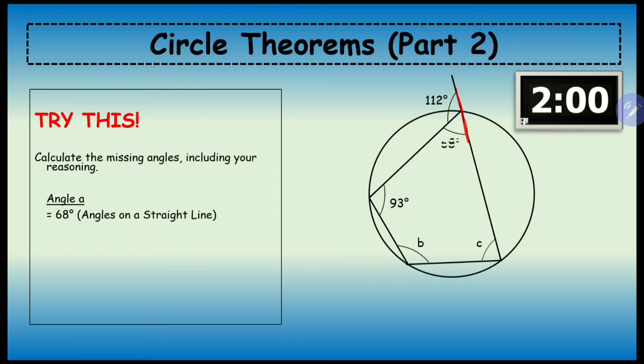Now don't forget, you've got opposite angles inside a cyclic quadrilateral and they have to equal 180 degrees. So b would be 112 and c would be 87.